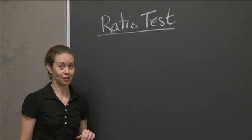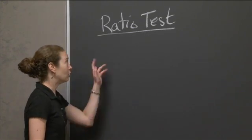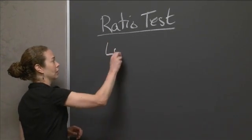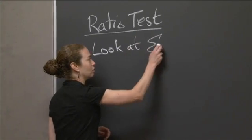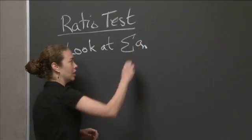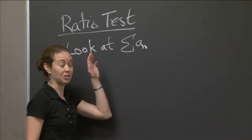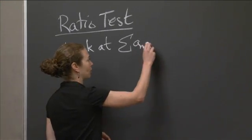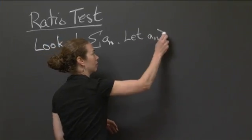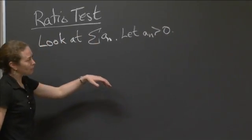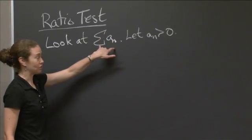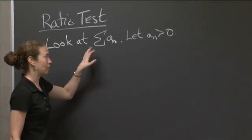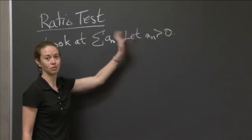This is the ratio test — you'll understand the name momentarily. We're going to start with a series where we call each term a sub n. I'm not going to tell you where n starts, because it doesn't matter. It's really only going to matter what's happening out at infinity. To make things simpler, we're going to let all the terms be positive. If they're not positive, you can take the absolute value of all the terms and still make conclusions in terms of absolute convergence. But let's just deal with all terms positive so we don't have to worry about anything.